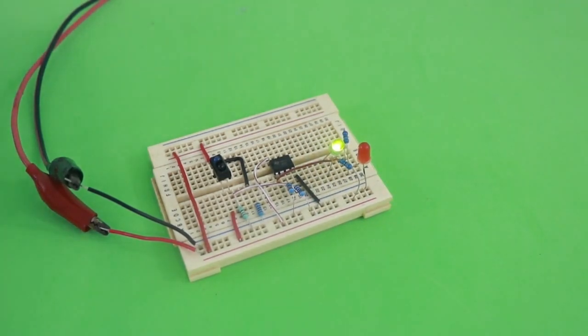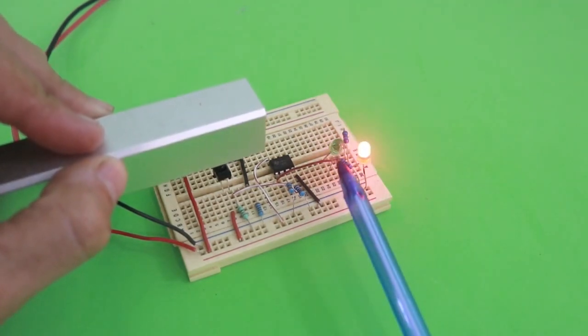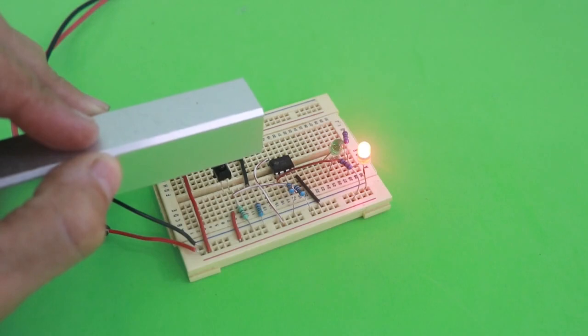Now, if we place an object close to the sensor, the green goes off and the red is now on.